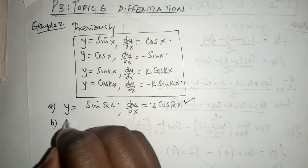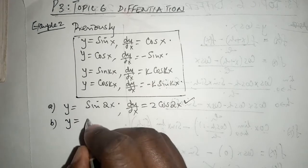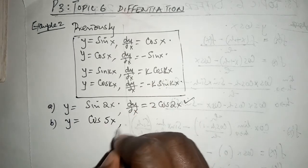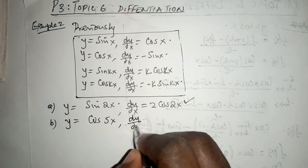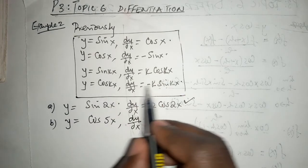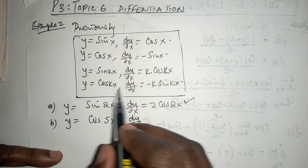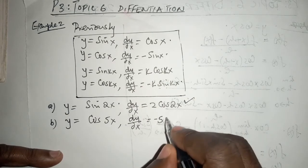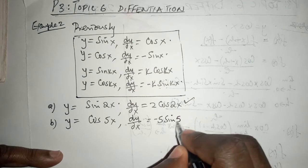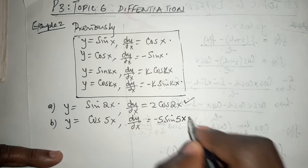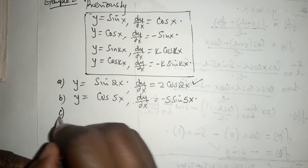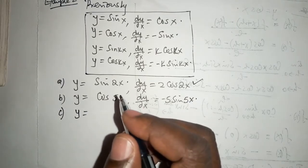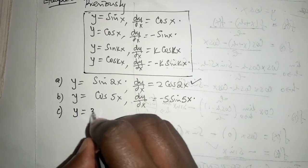Part B: if y equals cosine of 5x, then dy/dx, this one is already in this format, cosine 5x. dy/dx is minus 5, negative 5, the sine of 5x.